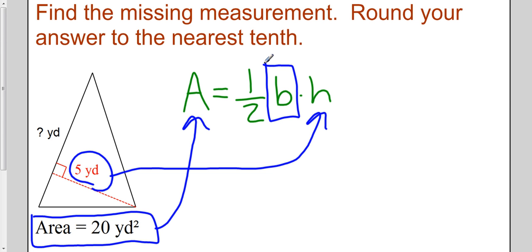So I need to find the base and the way I'm going to do that is I'm going to start by just plugging in the numbers into the formula. So what do I have? I have that 20 yards squared is equal to one half times B, which is our base, times H, which is five yards.